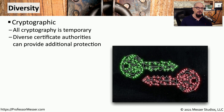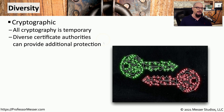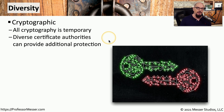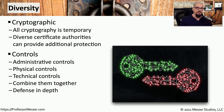We can also be diverse with our cryptography. The cryptography we're using today is only temporary — eventually, the capabilities we have to brute force our current key sizes will be surpassed by the power of future CPUs, so we will eventually be providing upgraded cryptography as the years go on. We could also incorporate cryptographic diversity today by using different certificate authorities. That way, if one CA happens to be breached, we still have other components that were signed by a completely different certificate authority.